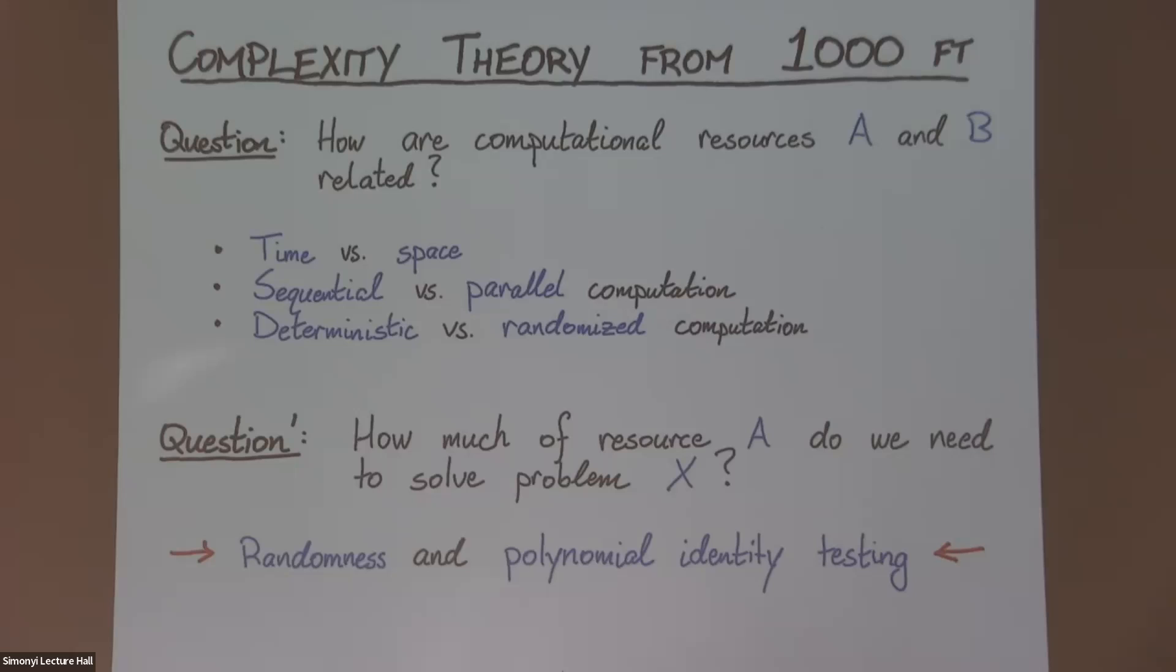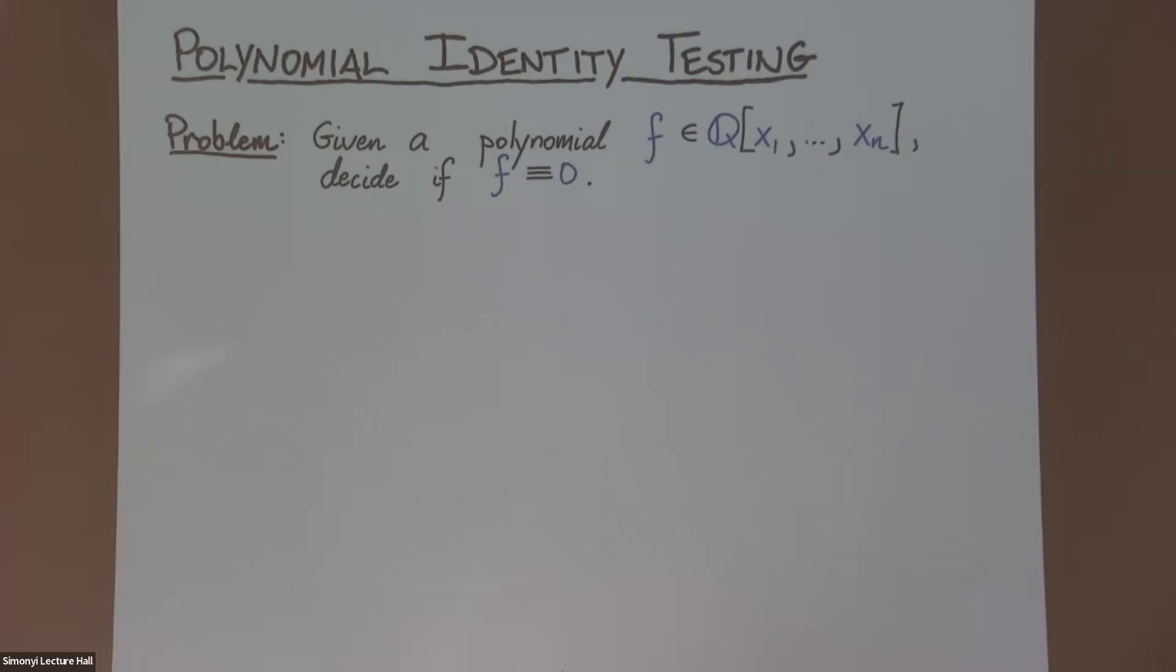So what is this problem? So I give you some multivariate polynomial over the rational numbers, and I ask you to tell me, is this polynomial the zero polynomial? Now, if I give you this polynomial as a list of monomials and coefficients, this problem is stupidly easy. You just check that all the coefficients are zero. But if I give you the polynomial in a more succinct representation, then the problem becomes more interesting and also more difficult.